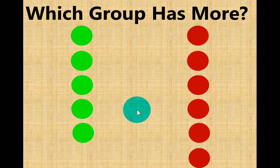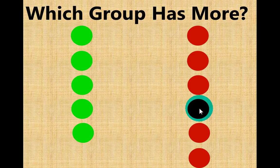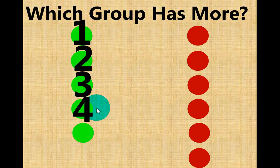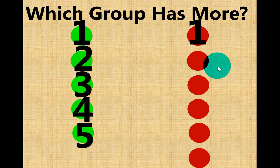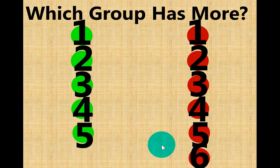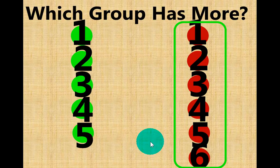Which group has more — the green circles or the brown circles? Let's count. One, two, three, four, five — we have five green circles. One, two, three, four, five, six — we have six brown circles. Which group has more? That's right, we have six brown circles.